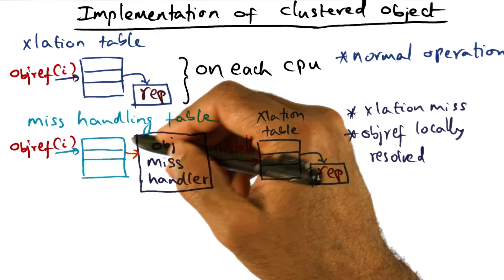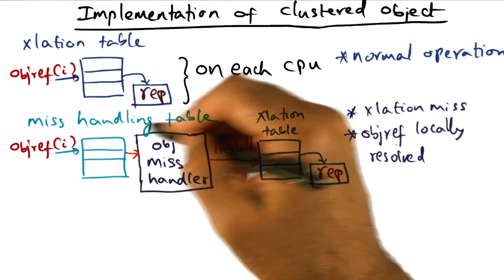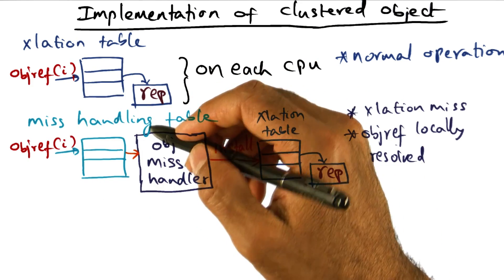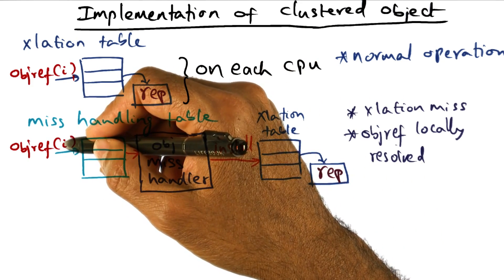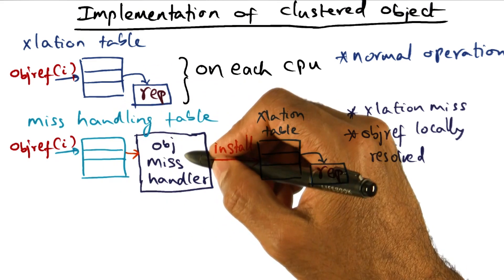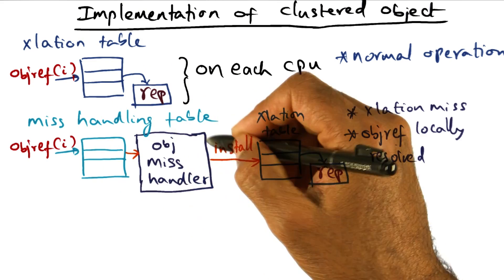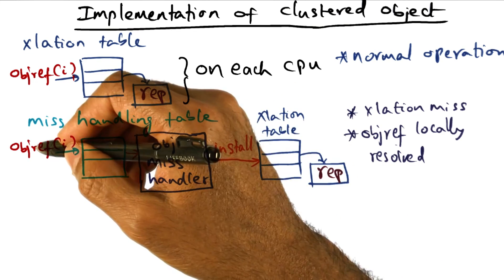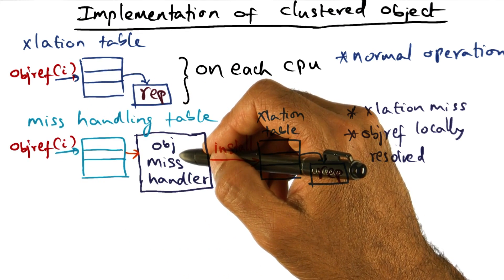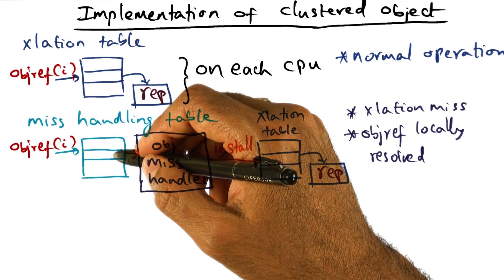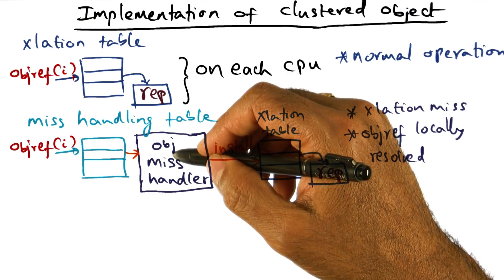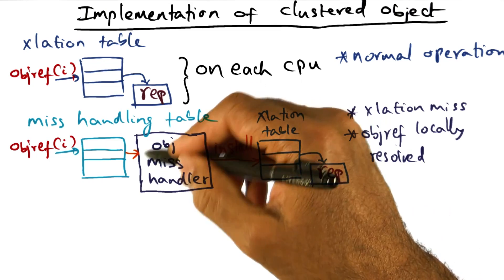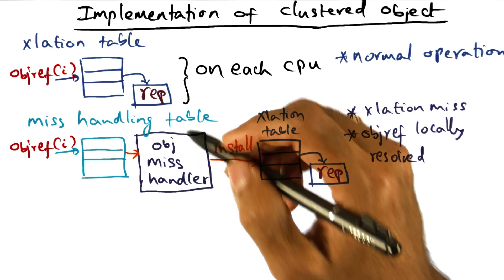And if a miss happens, then there is another data structure in the operating system called the miss handling table. The miss handling table is a mapping between the object reference that you're presenting and the handler that the operating system has for dealing with this missing object reference. Because if an object reference is missing, then the operating system has to find some way to make this reference point to a representation.